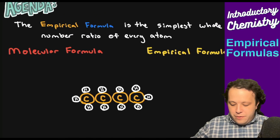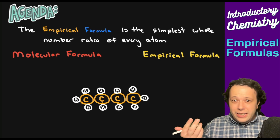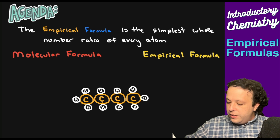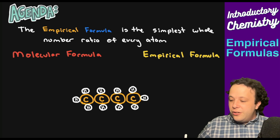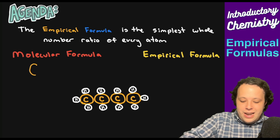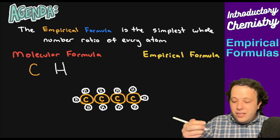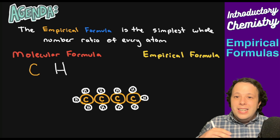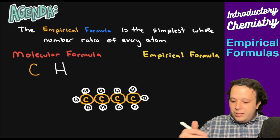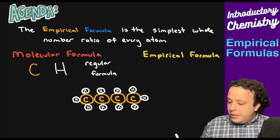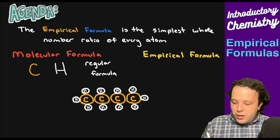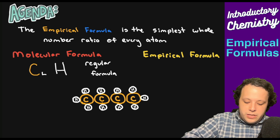Let's say if I have the following species here — butane, the same thing that you have in lighters. What we're going to do is count how many elements there are within the species, meaning we're going to count the number of carbons and hydrogens. So we identify we have C and H. We count all the orange carbons and we have four of them, so it's going to be C4.